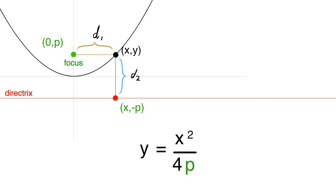So what we have is y is equal to x squared over 4p. This is the general formula for a parabola centered around the origin, where p is the distance of the focus from the origin.